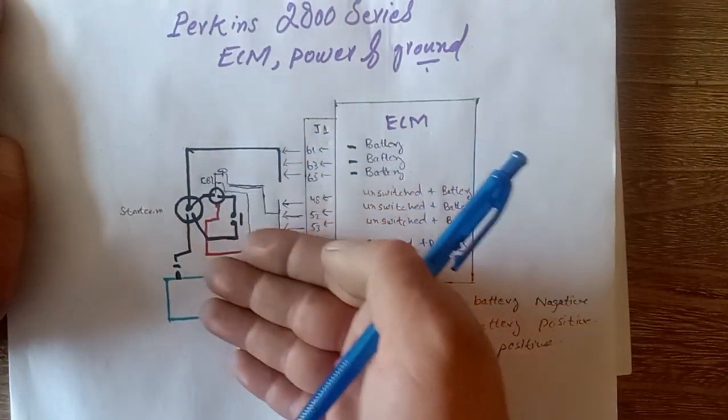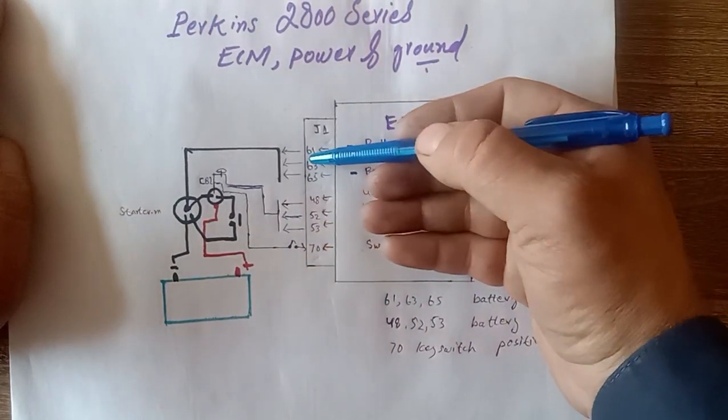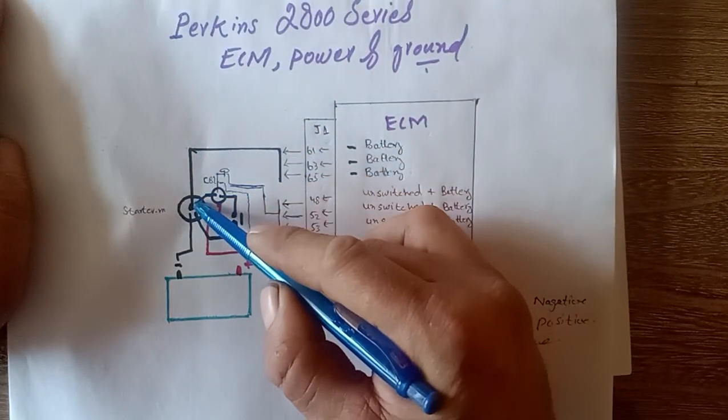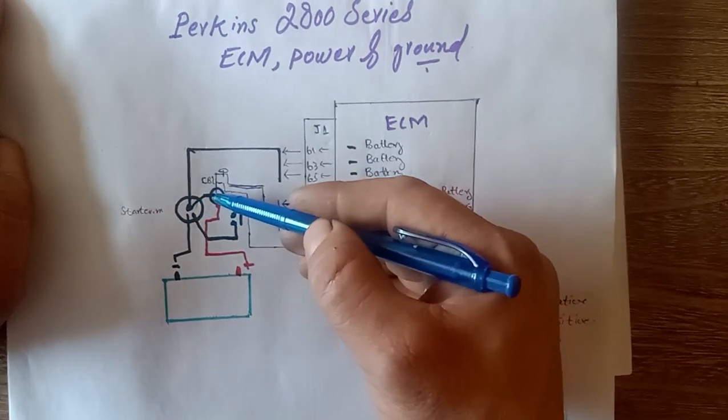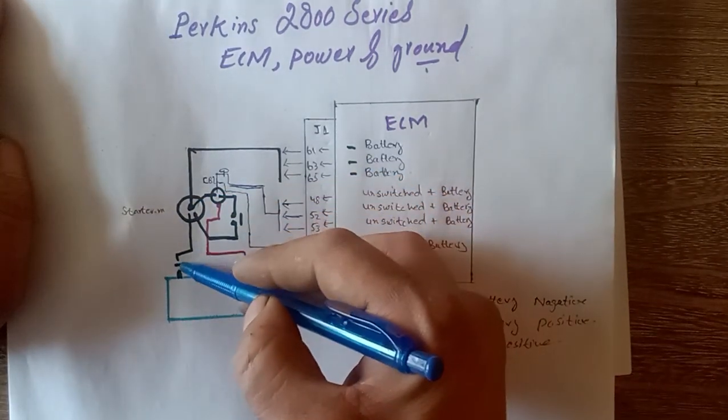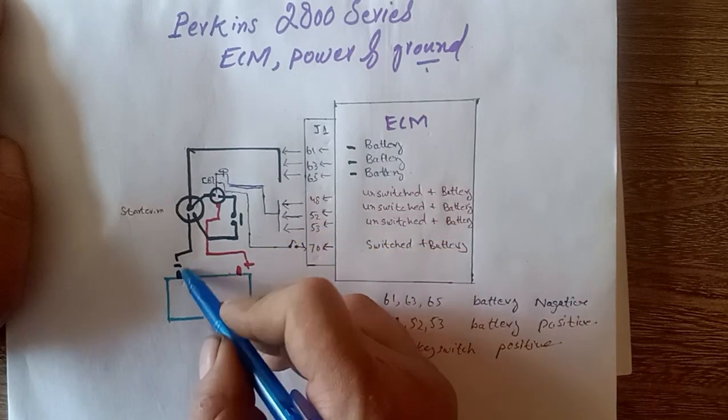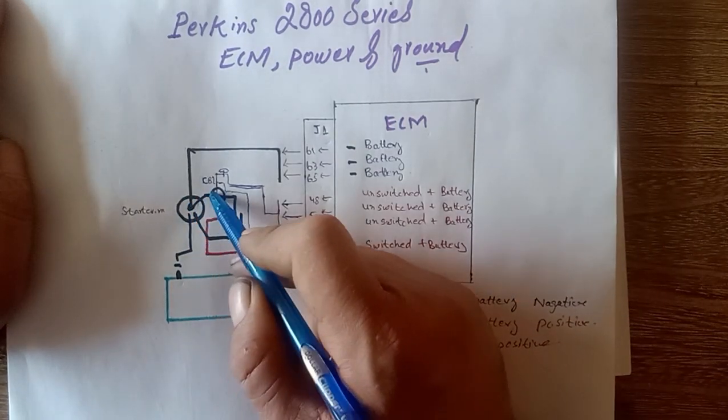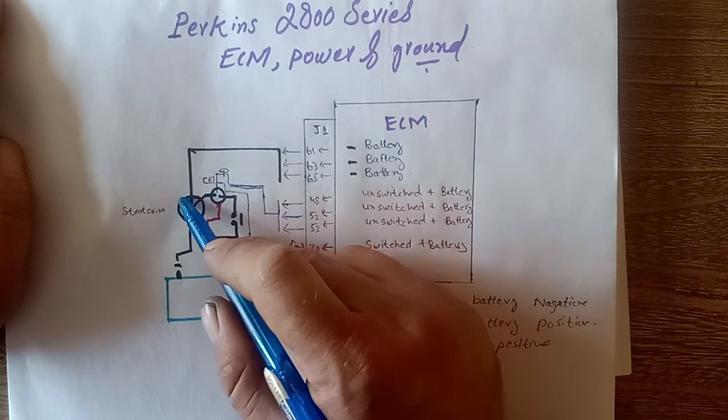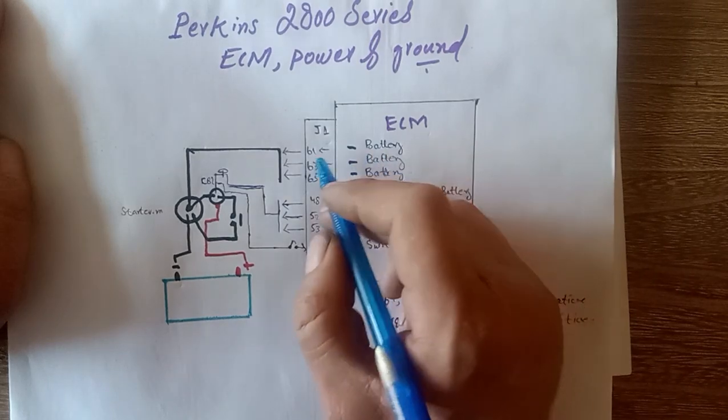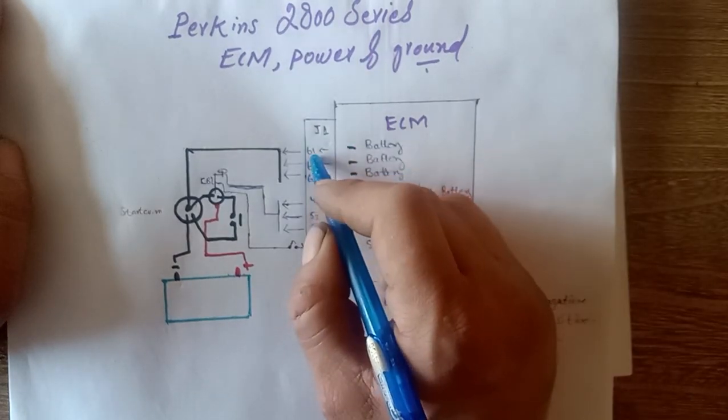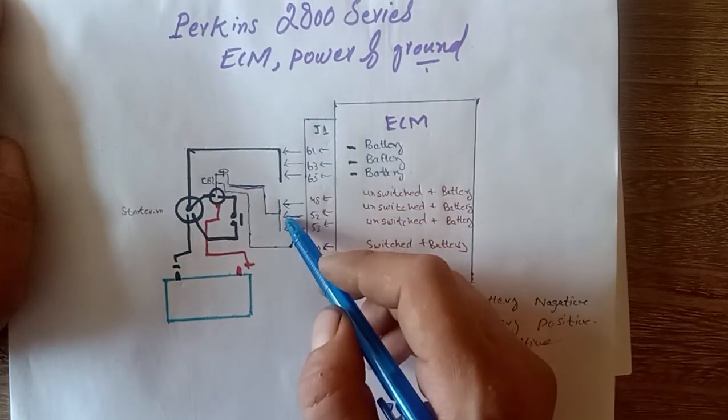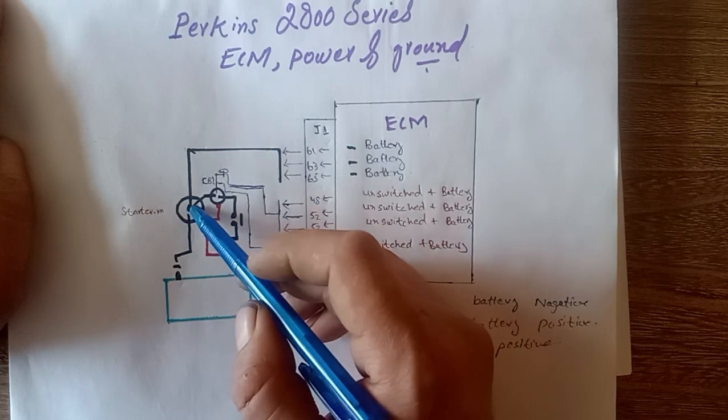Now let me explain the starting circuit. As you can see here, ground is going this way and attaches with the starter motor ground and the starter solenoid ground, and also connected with the battery negative. As you can see here, the battery supply is going from here, first of all attaches with the starter motor ground, then attaches with the starter motor solenoid.